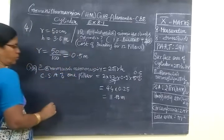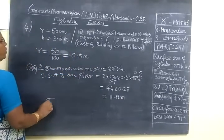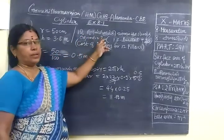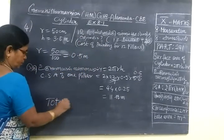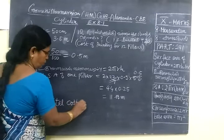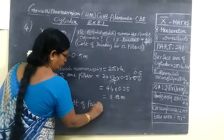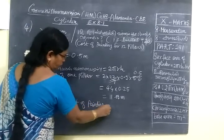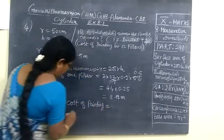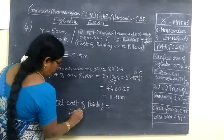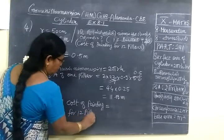So for 12 pillars we have to find. Therefore, total cost of painting for 12 pillars. So 12 will take.